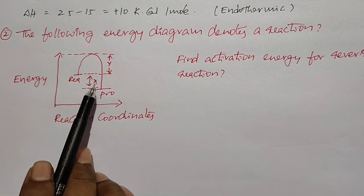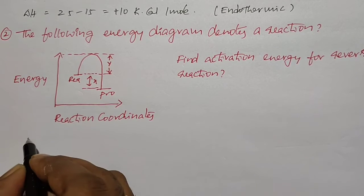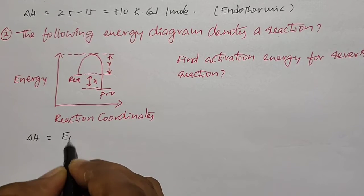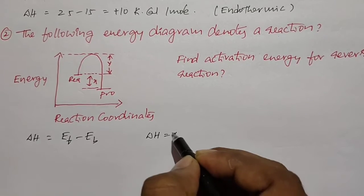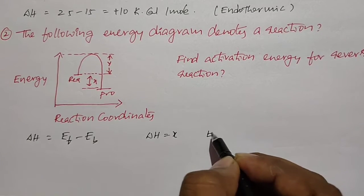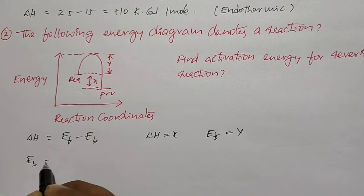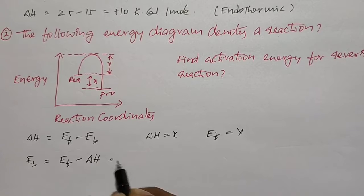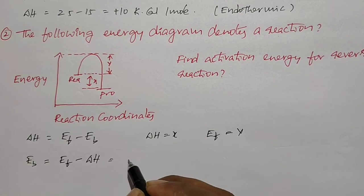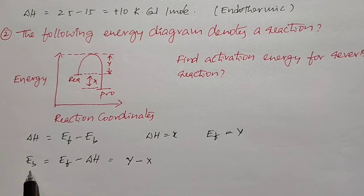They are asking about the activation energy for the backward reaction. The formula is ΔH = Ef − Eb. Here ΔH is given as x from the diagram and Ef = y from the diagram. They are asking for Eb, so Eb = Ef − ΔH, meaning Eb = y − x. That is the answer.